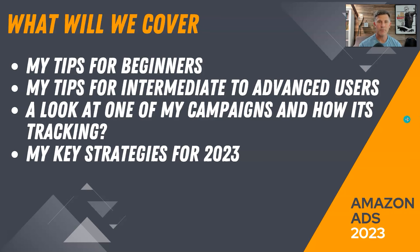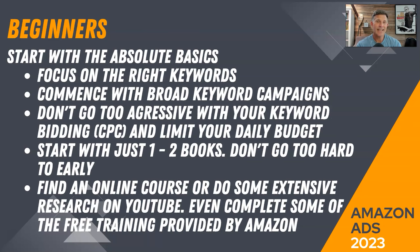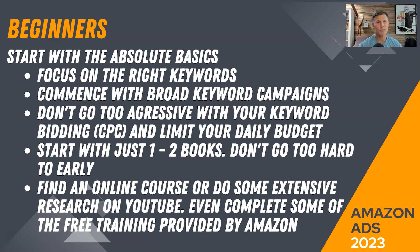For beginners, start with the absolute basics, and that begins with finding the right keywords. Keywords will make or break you — if you put in a whole heap of keywords not related to your book, that can destroy your budget. If people are clicking on those keywords and spending all your budget, you won't get the right keywords functioning at the right time. I usually put a maximum of 50 to 60 keywords in my broad, exact, and phrase keyword campaigns, and then as I optimize, I can add more.